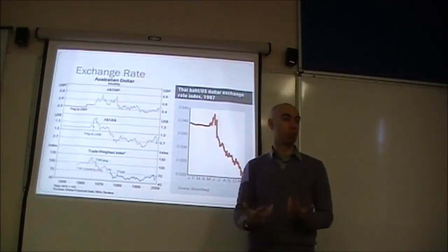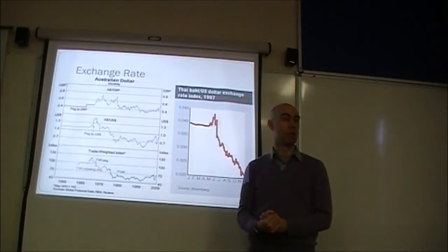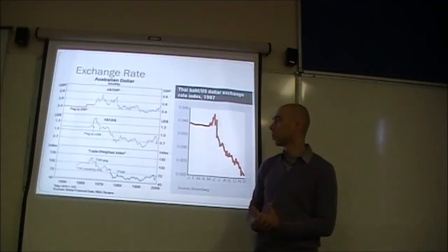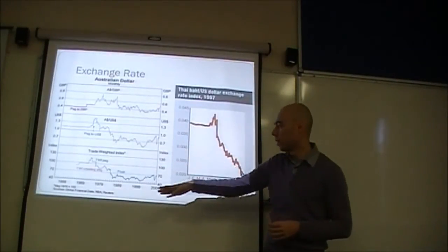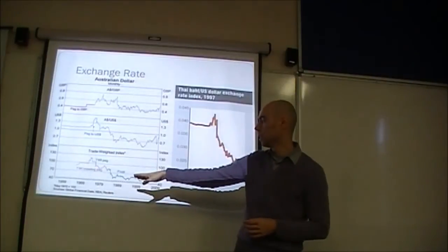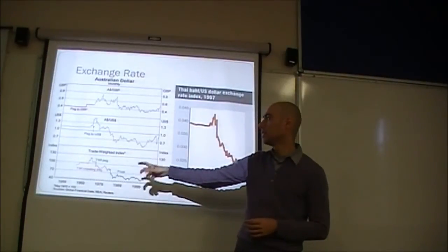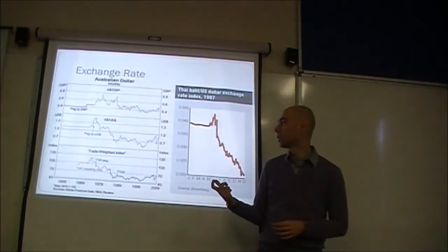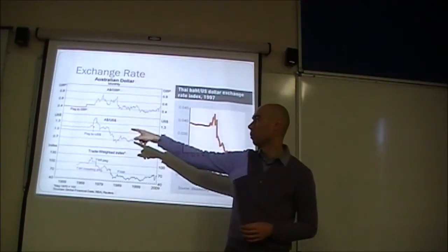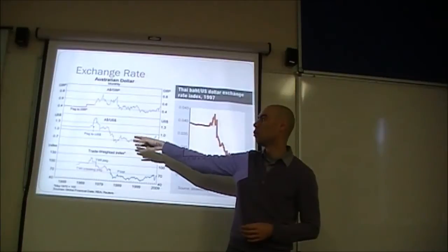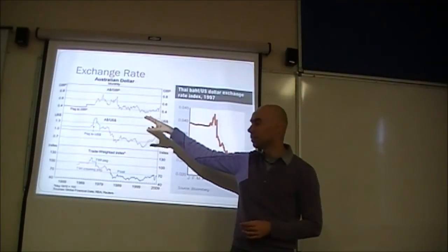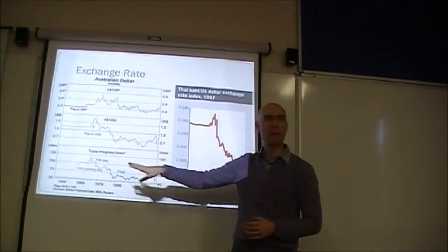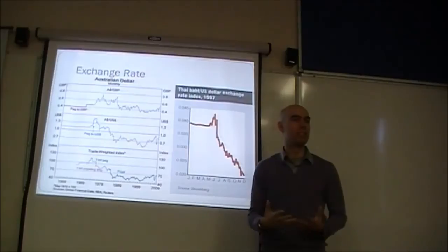So it's actually been pegged to three different types of exchange rates over time, just to give you some historical context. Originally, it was pegged to the Great British Pound up until the late 60s. It was then pegged briefly to the US dollar. You can see how it would be revaluated and devaluated, but it was otherwise fixed. Then it was pegged to the trade-weighted index.